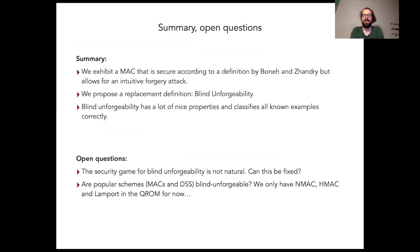This brings me to my last slide. Here's the summary and some open questions. As we have seen, there is a MAC that is secure according to the previous definition by Boneh and Zhandry, but allows for an intuitive forgery attack. So this definition really needs to be replaced. And we have such a replacement which is called blind unforgeability. Blind unforgeability has a lot of nice properties and classifies all the known examples that we have correctly.